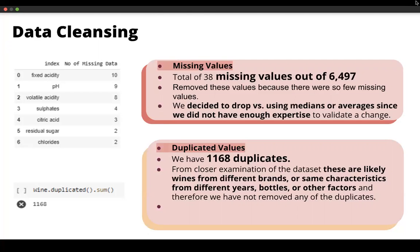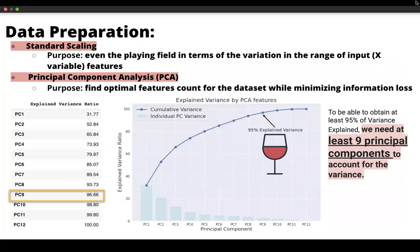Because with the understanding of the nature of this data set, there are some situations where wines have the same features, like the fixed acidity, pH, citric acid, but then they belong to different brands or different years, different bottles or some other factors of the wine as well. So we didn't remove further duplicates.